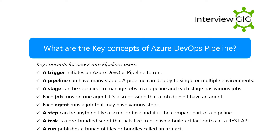It's also possible that a job doesn't have an agent. Each agent runs a job that may have various steps. A step can be anything like a script or task and it is the smallest part of a pipeline. A task is a pre-bundled script that acts to publish a build artifact or to call a REST API. A run publishes a bunch of files or bundles called an artifact.